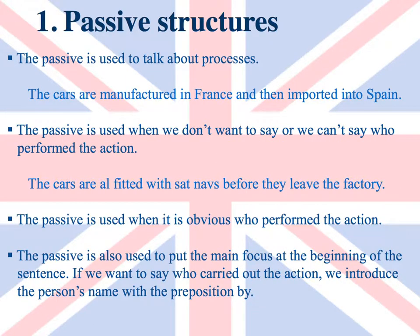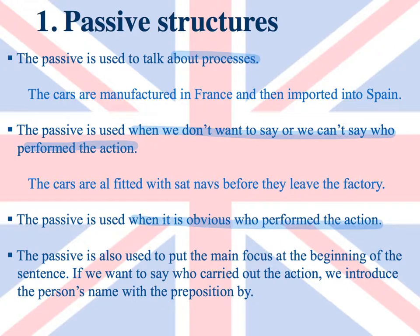The passive is used to talk about processes: the cars are manufactured in France and then imported into Spain. The passive is used when we don't want to say or we can't say who performed the action: the cars are all fitted with sat-navs before they leave the factory. The passive is used when it is obvious who performed the action: the suspect has finally been arrested.